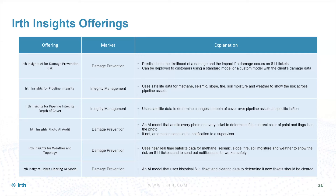Earth Insights for Pipeline Integrity is very close to depth of cover but a little different — instead of individual lat-longs, we look at entire system segments to determine risk, using satellite imagery to look for methane, seismic slope, fire, soil moisture, and weather across those entire systems and segments so you can see risk across the board. Earth Insights for Pipeline Integrity Depth of Cover — what we've been talking about — takes specific lat-longs and uses satellite imagery to determine the elevation change or elevation delta.